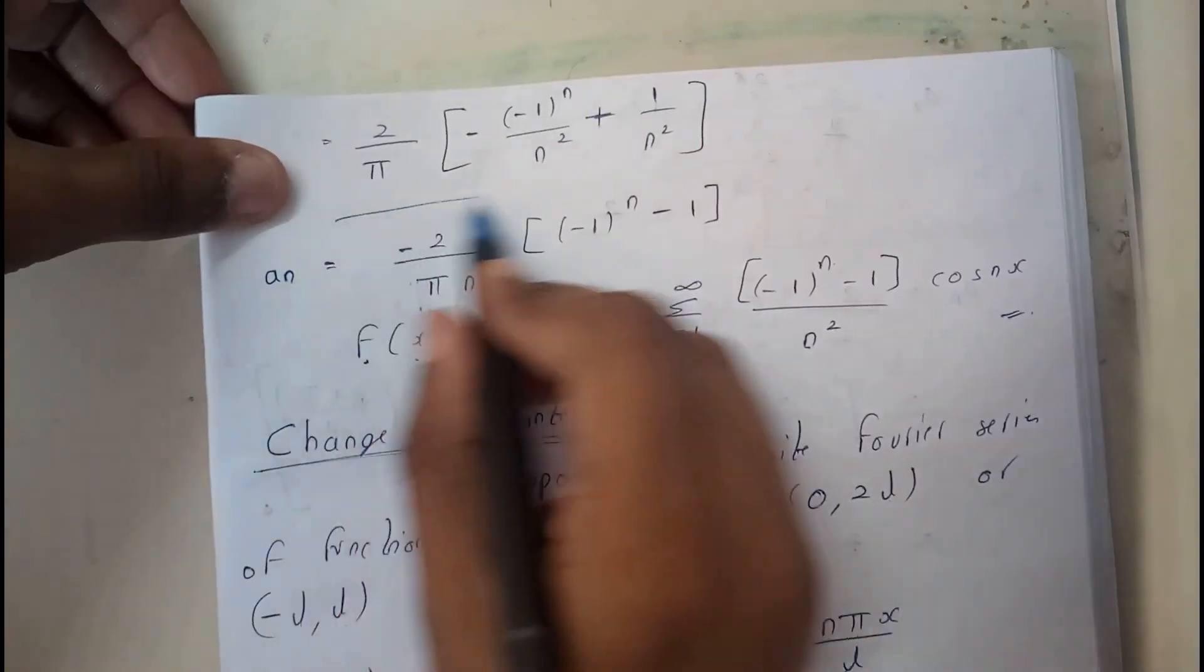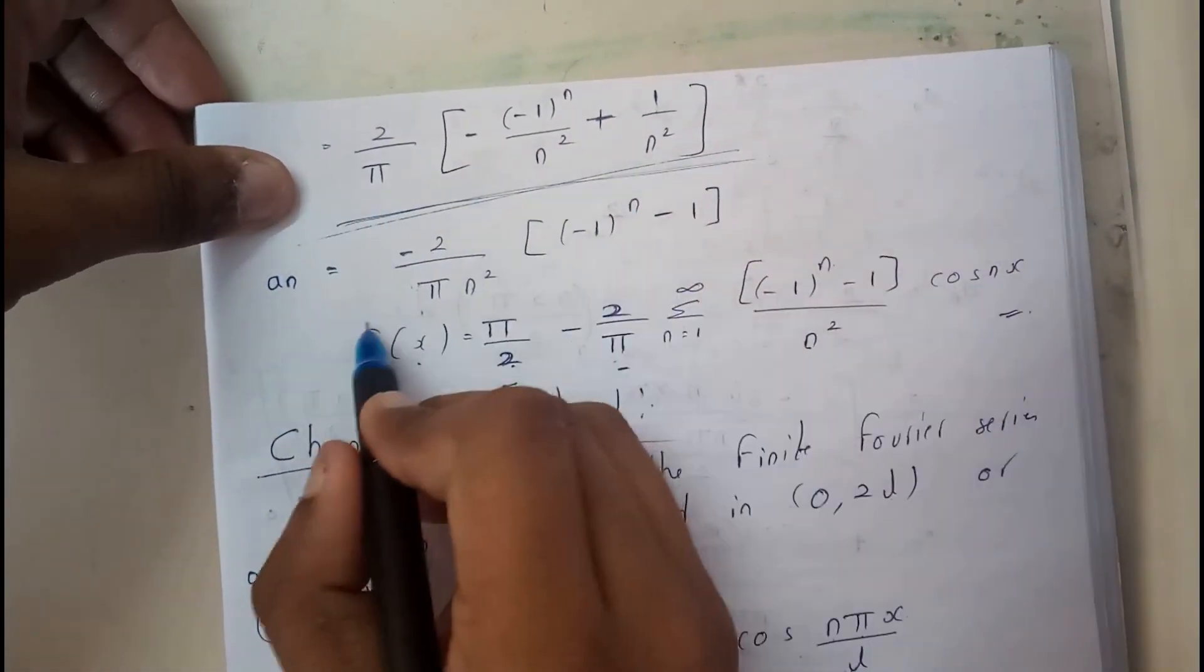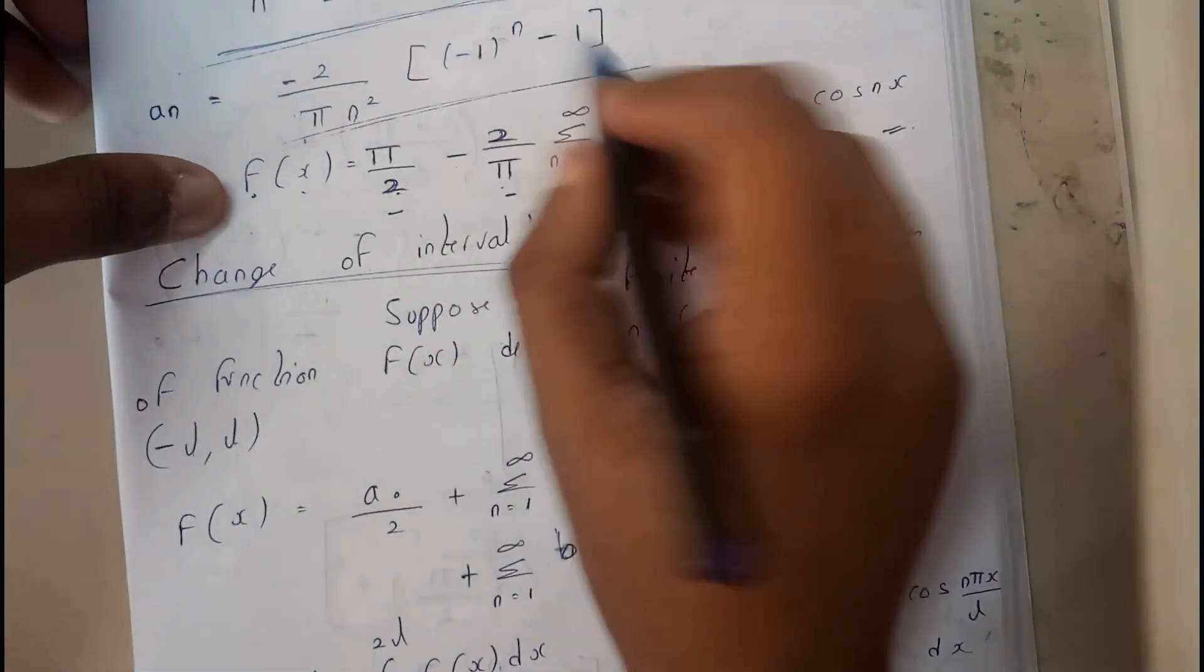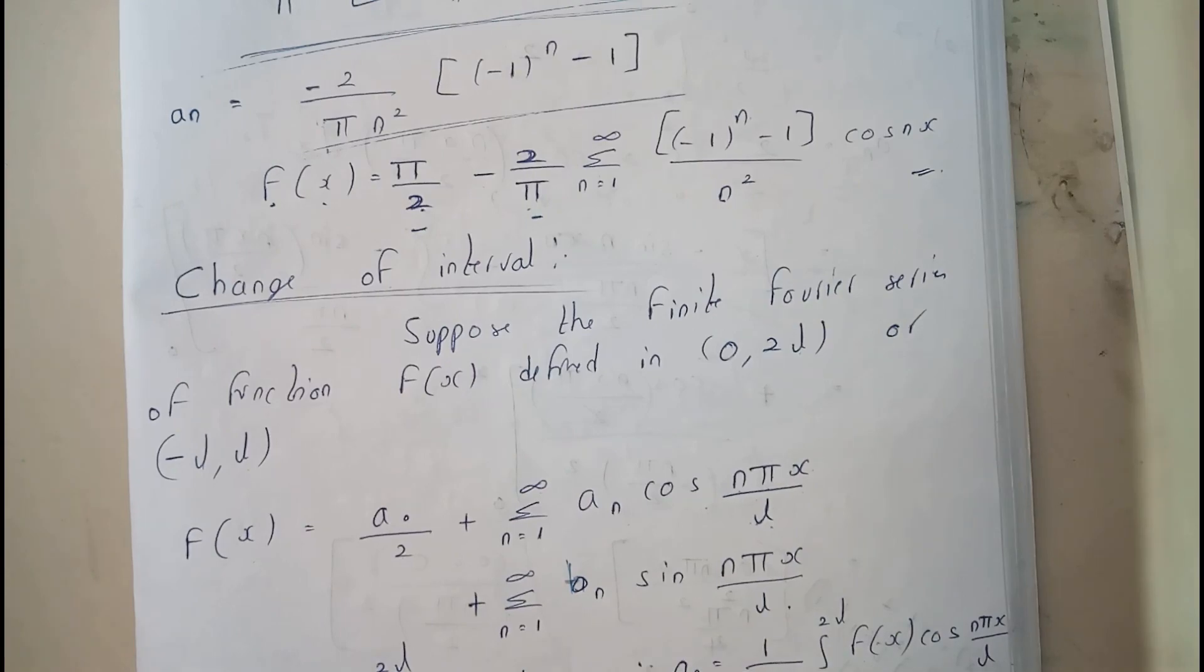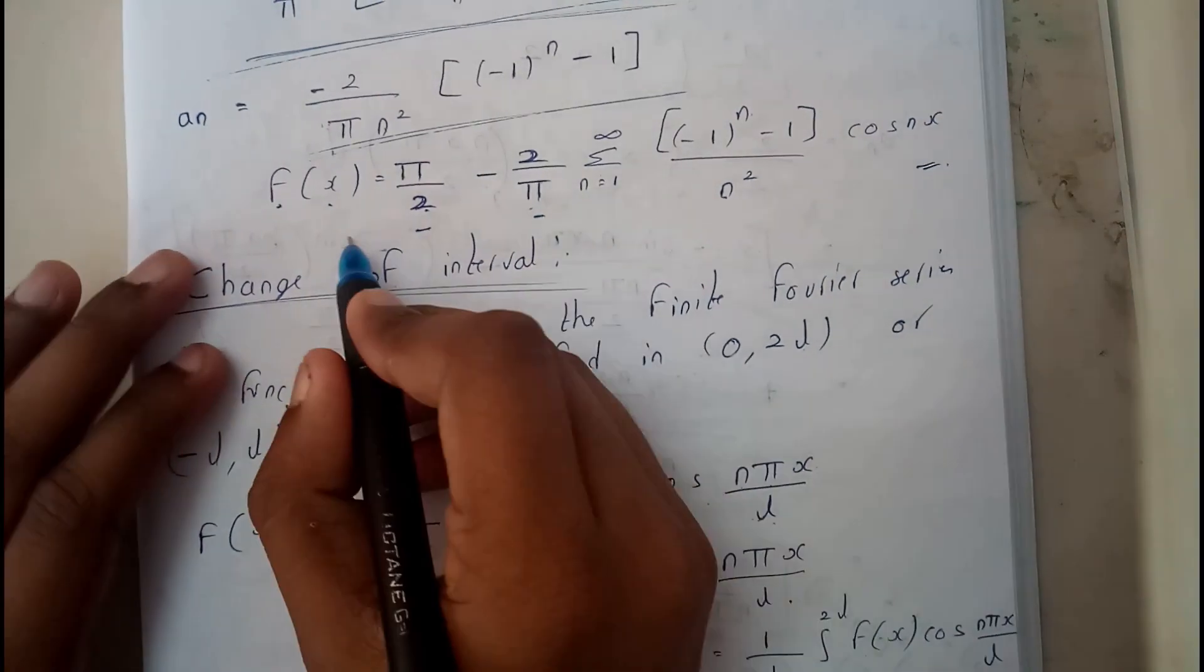So we got a term like this for f(x). That will be our aₙ. So we will be substituting these two, a₀ and aₙ, in our basic equation of f(x), so we will be getting this result.